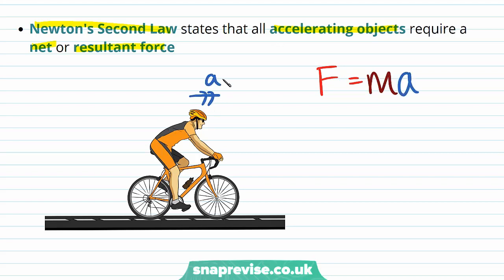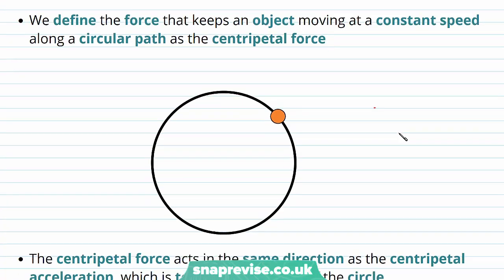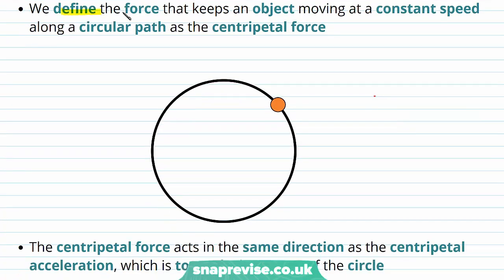So therefore, this person on a bicycle, if they're accelerating, there must be a resultant force on them, because of Newton's second law. We define the force that keeps an object moving at a constant speed along a circular path as the centripetal force.